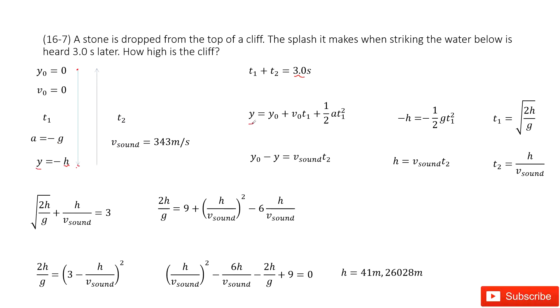So we can write a function like this one. And input Y as negative H. This part is zero and V0 is zero. Acceleration is negative g. So in this case, we get T1.